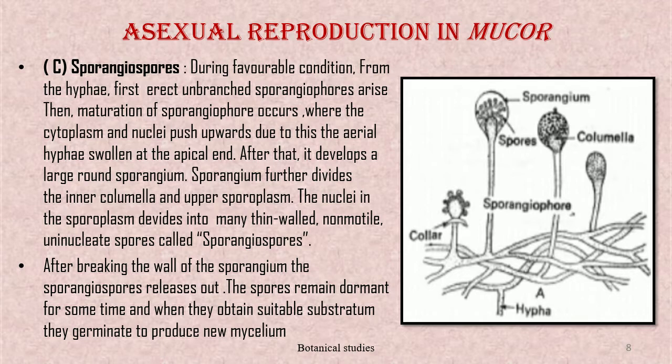Asexual reproduction by formation of sporangiospores: during favorable conditions, from the hyphae, an erect branch called the sporangiophore arises. Maturation of the sporangiophore occurs, where the cytoplasm and nuclei push upward, causing the aerial hyphae to swell at the apical end. A large round sporangium develops, which is further divided into an inner columella and upper sporoplasm. The nuclei in the sporoplasm divide into many thin-walled, non-motile, uninucleate spores called sporangiospores. After breaking the wall of the sporangium, the sporangiospores are released; the spores remain dormant for some time and upon obtaining a suitable substratum, germinate to produce new mycelium.